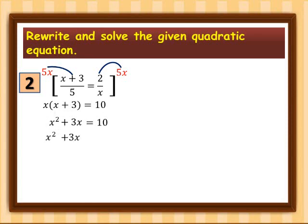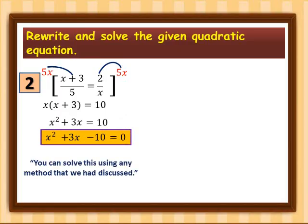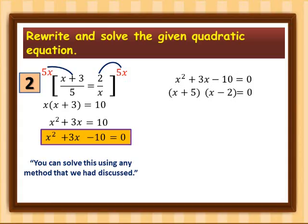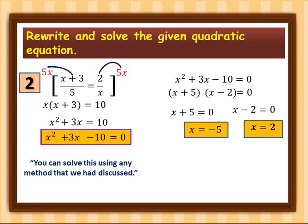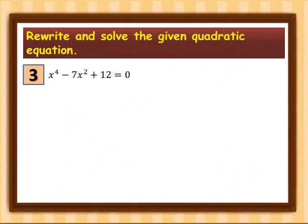Rewriting in standard form: x squared plus 3x minus 10 is equal to 0. Using the factoring method, the factors are (x + 5) and (x − 2) equal to 0. Equating each factor to 0: x + 5 = 0 and x − 2 = 0, giving x = −5 and x = 2. These are the two roots of Example 2.